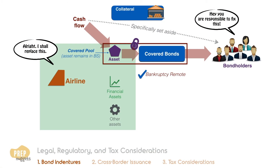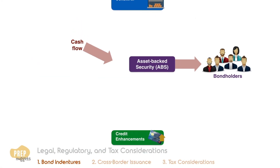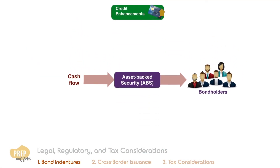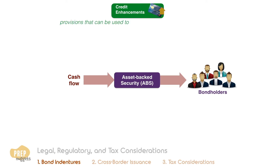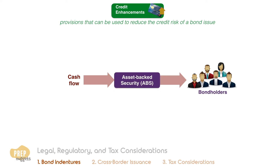That brings us to our next item specified on a bond's indenture: credit enhancements. Credit enhancements are provisions that can be used to reduce the credit risk of a bond issue. They are very often used when creating ABS, so we shall discuss this section in the context of ABS.